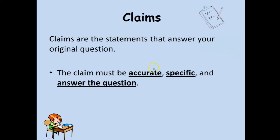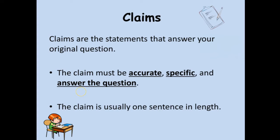The claim has to be accurate, specific, and it has to answer the question. If we were to ask you what is the concentration of acid in vinegar, you can't just say there's a lot of acid in vinegar or there's little acid in vinegar. You need to be specific — the vinegar contains 5% acid. The claim is usually one sentence in length and it's directly related to the purpose of the experiment. Answer the original question.